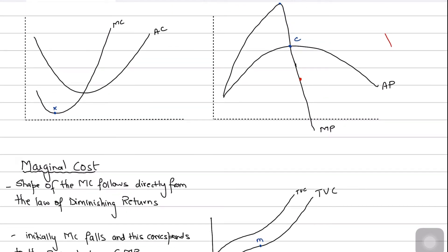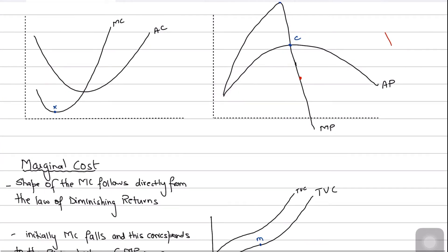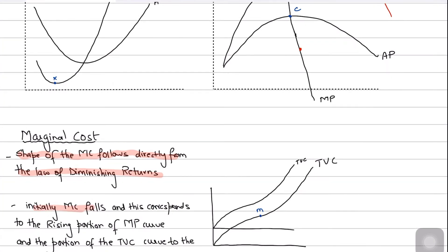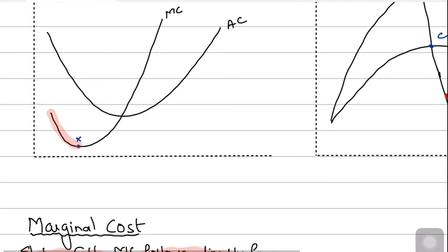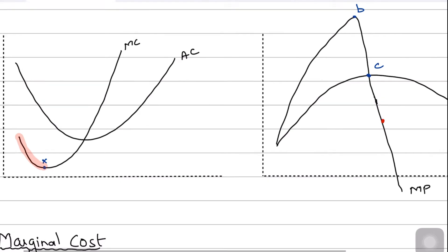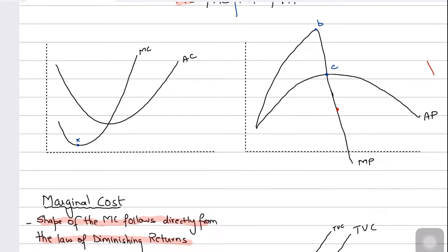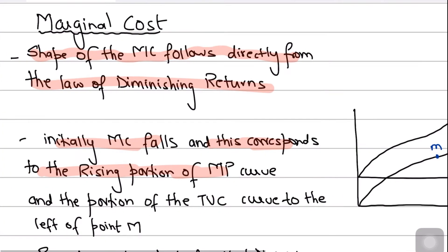The shape of the marginal cost curve follows directly from the law of diminishing returns. Initially, marginal cost is falling, and this corresponds to the rising portion of the marginal product curve. So the area where marginal cost is going down corresponds exactly to the region where marginal product is rising.